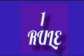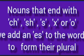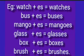First rule: nouns that end with ch, sh, s, x, or o — we add 'es' to the words to form their plural. For example, here you can see the word 'watch.' It is ending with the letters ch, so we add 'es' to convert the singular noun into plural noun. It becomes w-a-t-c-h-e-s, watches.